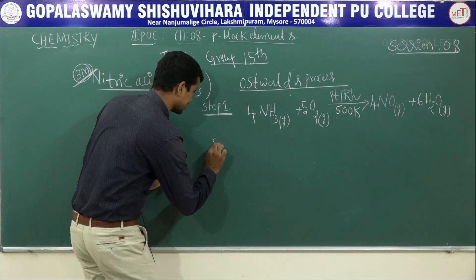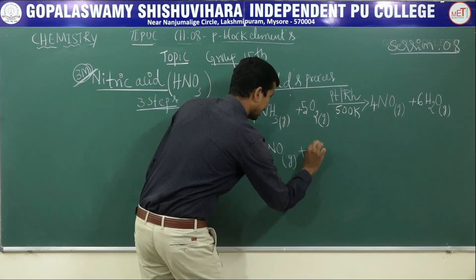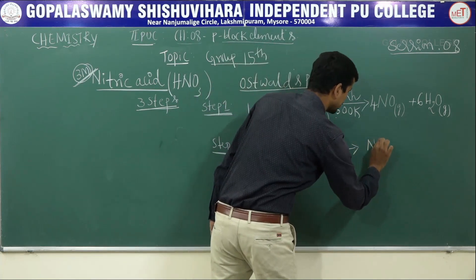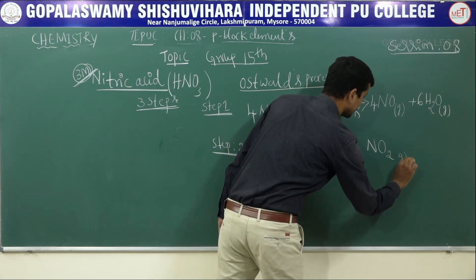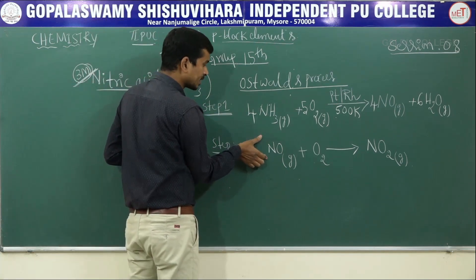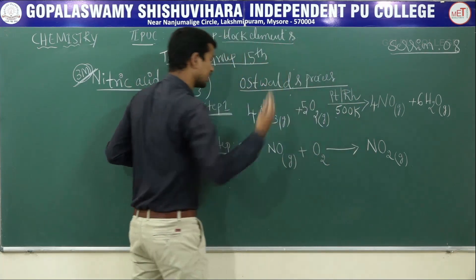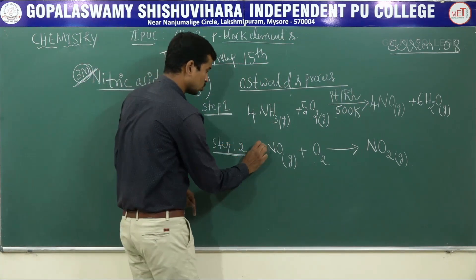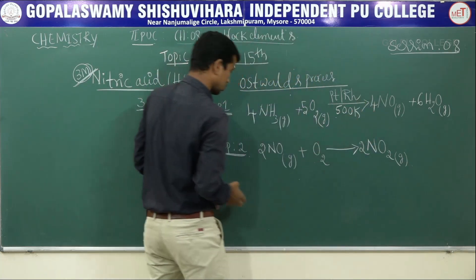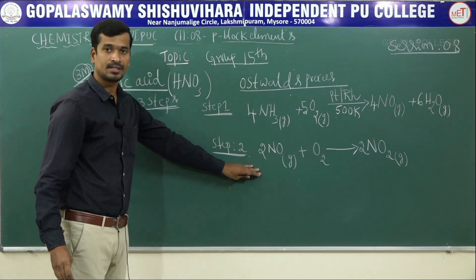In step two, nitric oxide NO gas undergoes further oxidation to give nitrogen dioxide NO2 gas. The balanced equation is: 2NO + O2 → 2NO2.